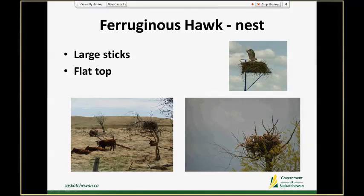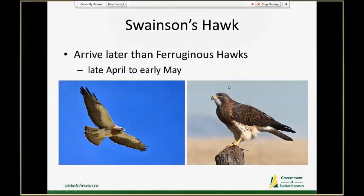Ferruginous hawk nests, if it's a well-established nest a couple of years old, can be pretty distinctive looking. They're composed of sticks that are usually larger, chunkier, and bigger in general. If it's a couple of years old these nests have been built upon year after year, so they have a flat looking top with really rectangular straight looking sides — less oval and more rectangular — and they can be very, very large.